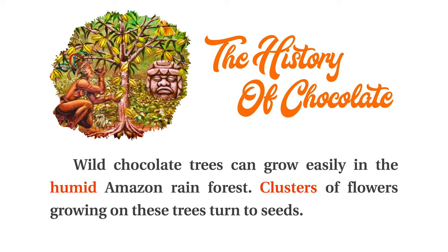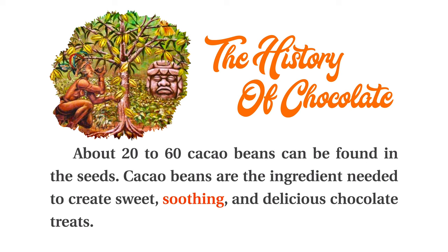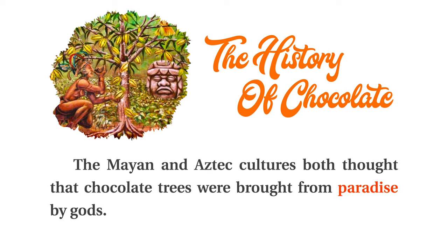Wild chocolate trees can grow easily in the humid Amazon rainforest. Clusters of flowers growing on these trees turn to seeds. About 20 to 60 cacao beans can be found in the seeds. Cacao beans are the ingredient needed to create sweet, soothing, and delicious chocolate treats. The Mayan and Aztec cultures both thought that chocolate trees were brought from paradise by gods.